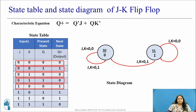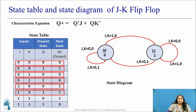For the next combination, when the present state is 0 and J is 1 and K is 0, state transition takes place and the next state becomes 1. When present state is 1 and J is 1 and K equals 0, the next state is 1, which is same as the present state, so it remains in the same state.